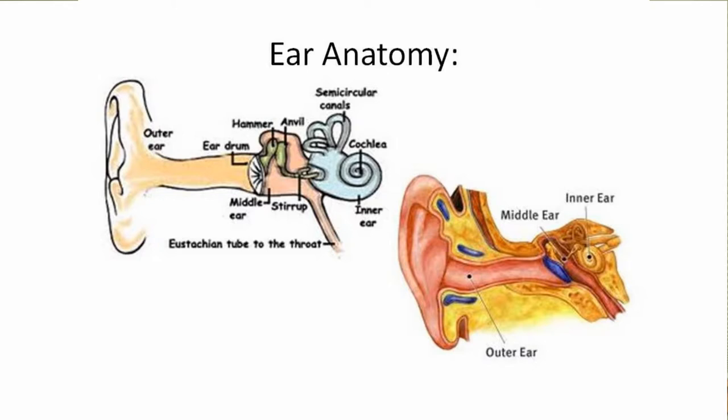The outer ear is the eardrum on out, including the outside of the ear. The middle ear is the space behind the eardrum — it should be an air-filled space containing three tiny bones that connect the eardrum to the nerve of hearing: the malleus, the incus, and the stapes — also called the hammer, anvil, and stirrup. These bones need to be surrounded by air to vibrate and transmit sound. There is actually a lot of hearing amplification that takes place between the eardrum and the stapes — it's kind of our body's natural hearing aid. When this space fills with fluid, you get a significant hearing loss.